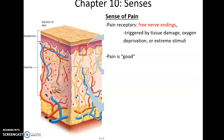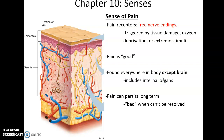Pain receptors are found all throughout the body and are free nerve endings — sensory neurons with free nerve endings. They can be triggered by tissue damage, oxygen deprivation, or extreme stimuli. All organs of the body have pain receptors except the brain. Initially, pain is a good thing — we want to be aware when something is damaging our body. However, pain can become bad when it persists too long. When pain cannot be resolved and you're constantly feeling it, that becomes detrimental to your well-being. Chronic pain is a major health issue.